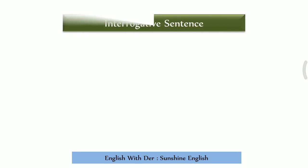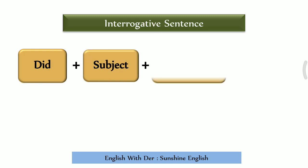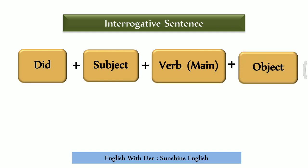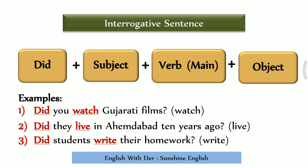For interrogative sentences, the structure is: Did + subject + base form of the verb + object + other words. Examples: 'Did you watch Gujarati films?' 'Did they live in Ahmedabad 10 years ago?' 'Did students write their homework?' These are yes/no interrogative sentences in simple past tense.